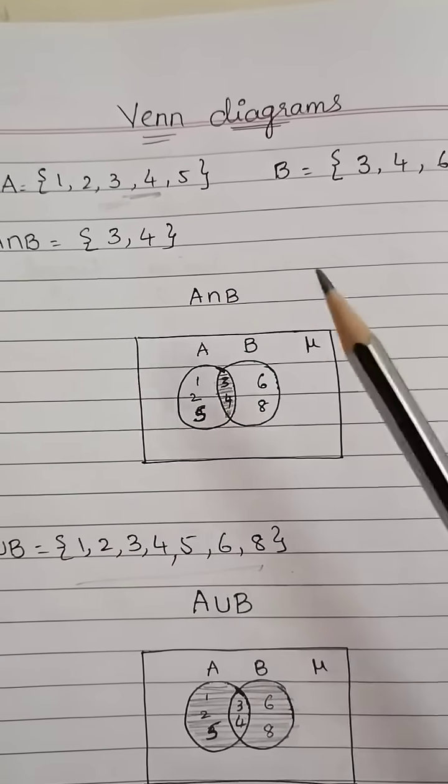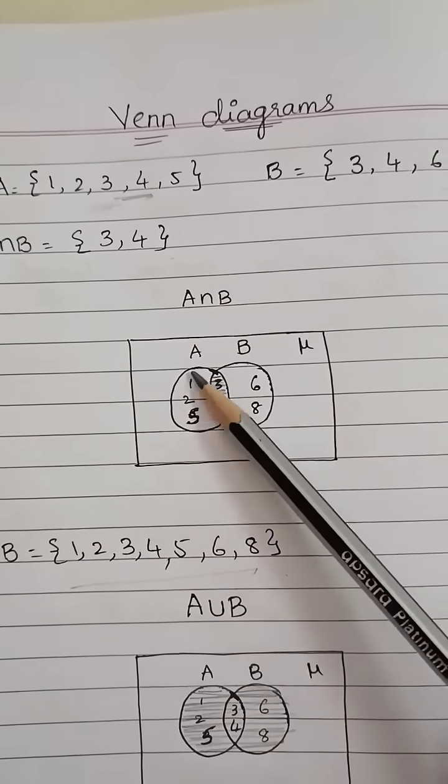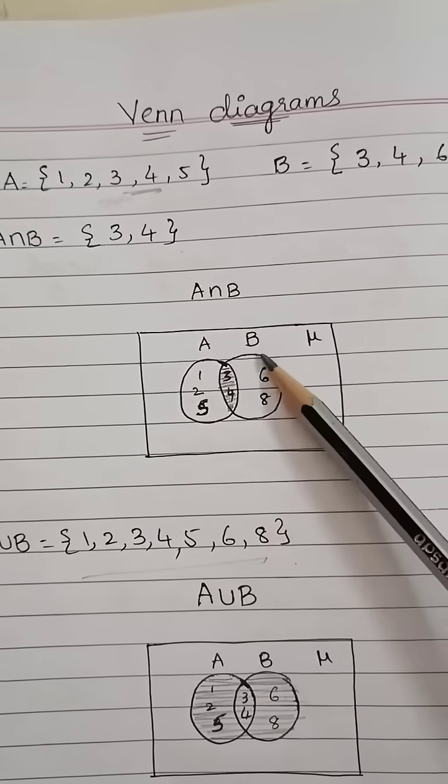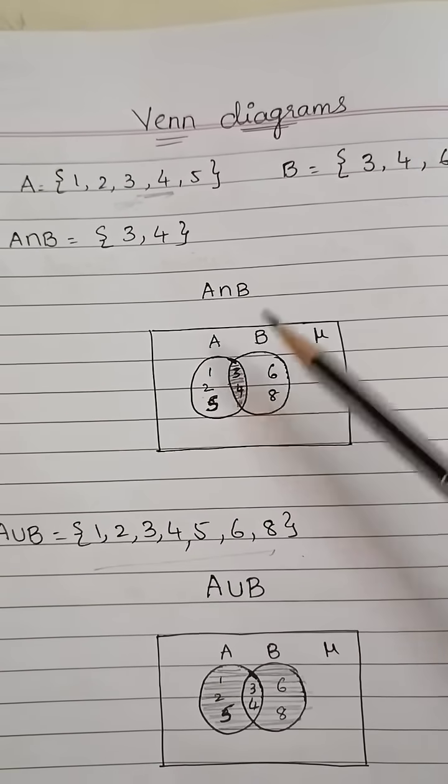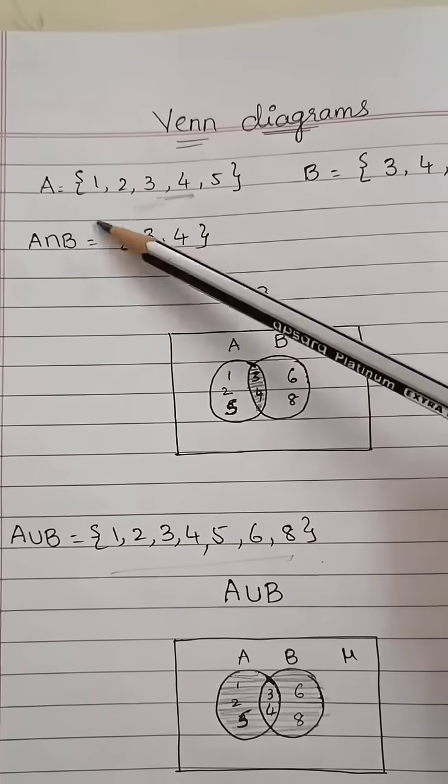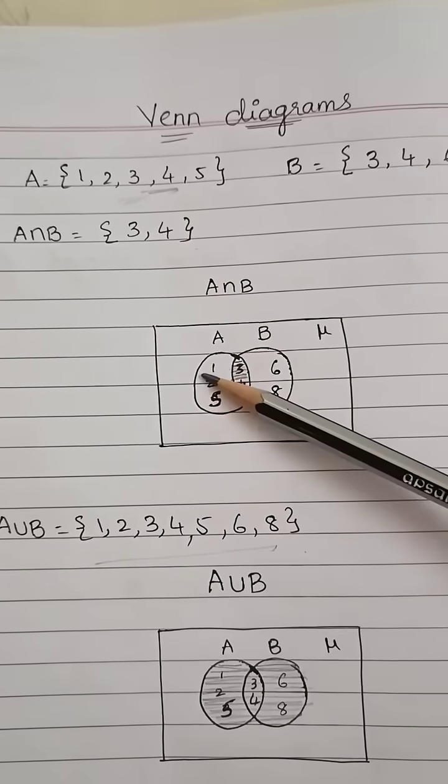For the A intersection B diagram, draw circle A and circle B. Three and four come in the middle intersection part. One, two, five will be in the A set.